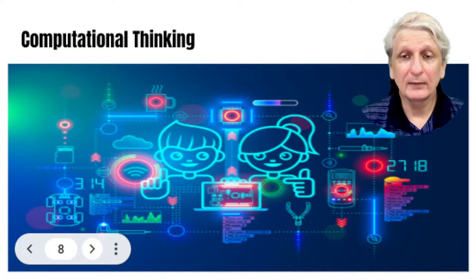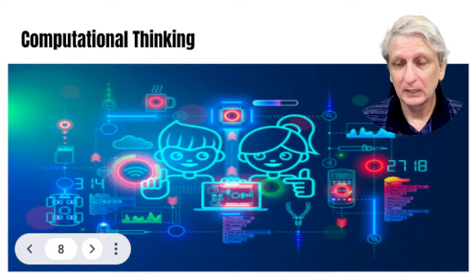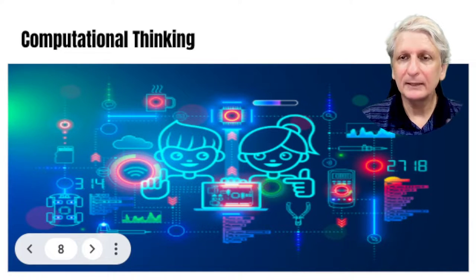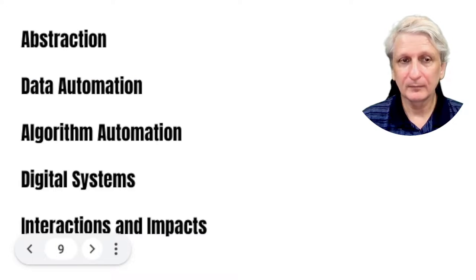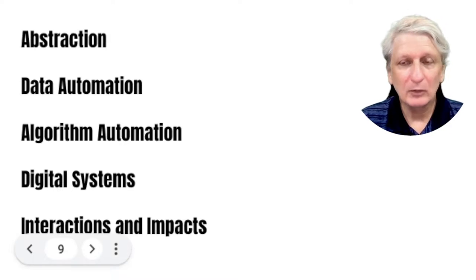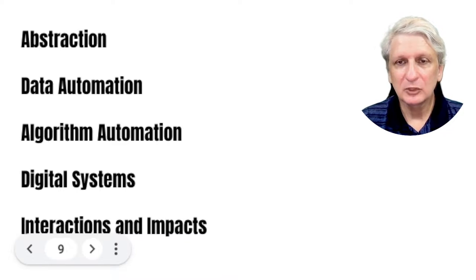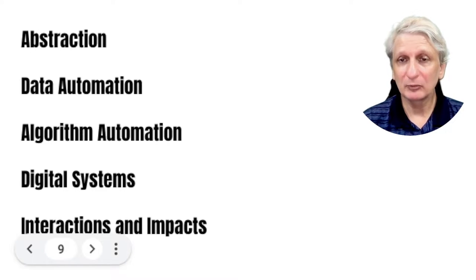The final thing to look at this week is to develop a more in-depth understanding of computational thinking. I've provided a number of additional video clips to look through and explore the main components of computational thinking as presented in the digital technologies curriculum. These will cover abstraction, data, automation, algorithms, digital systems, and interaction and impacts. There are also additional readings and activities associated with each of those so that you can better understand how to teach the various concepts related to computational thinking.